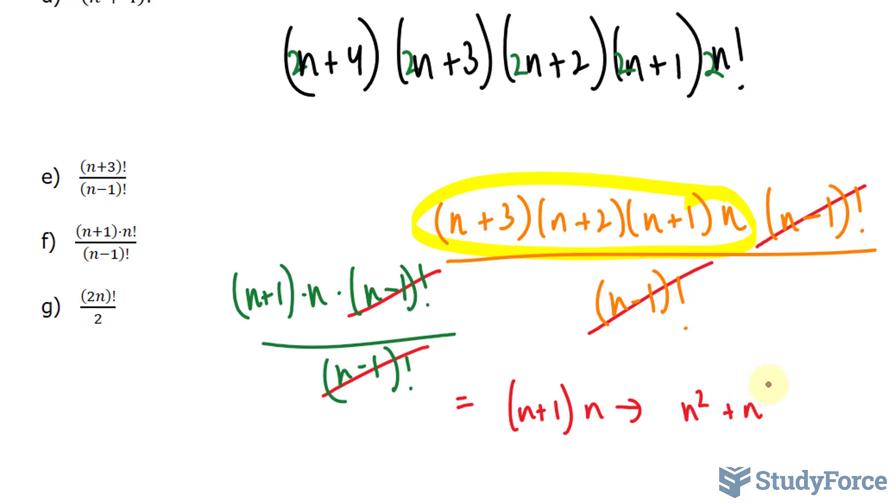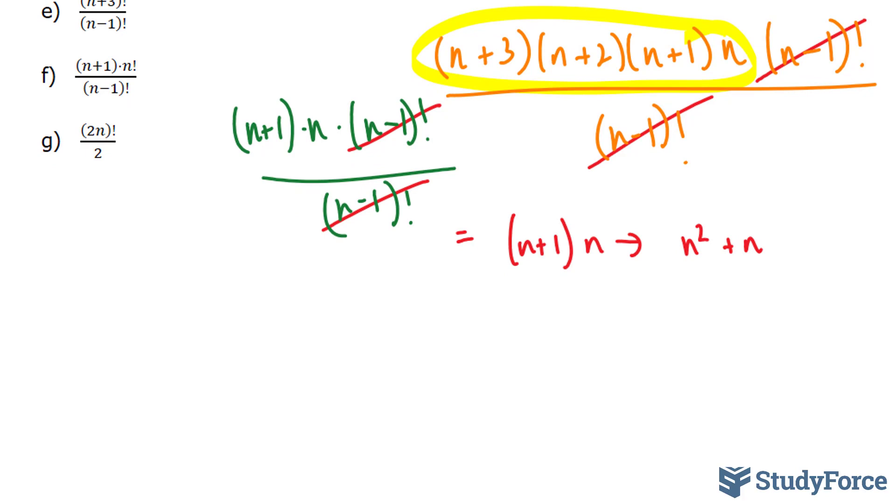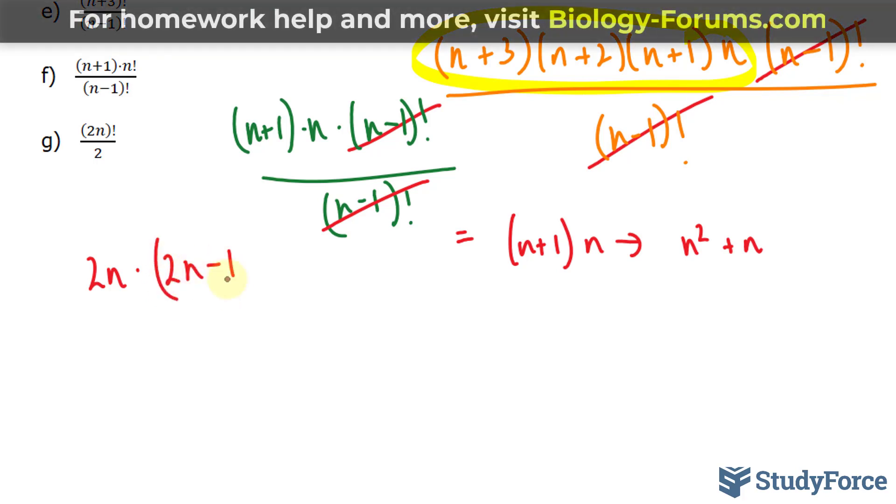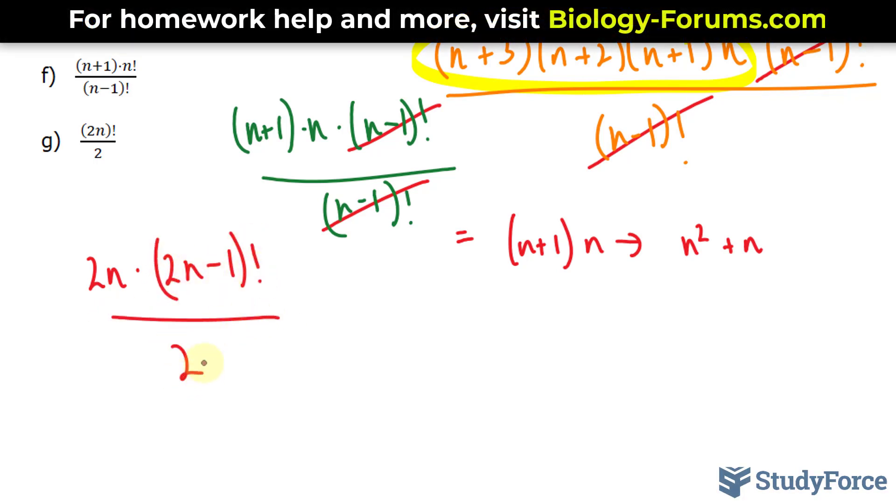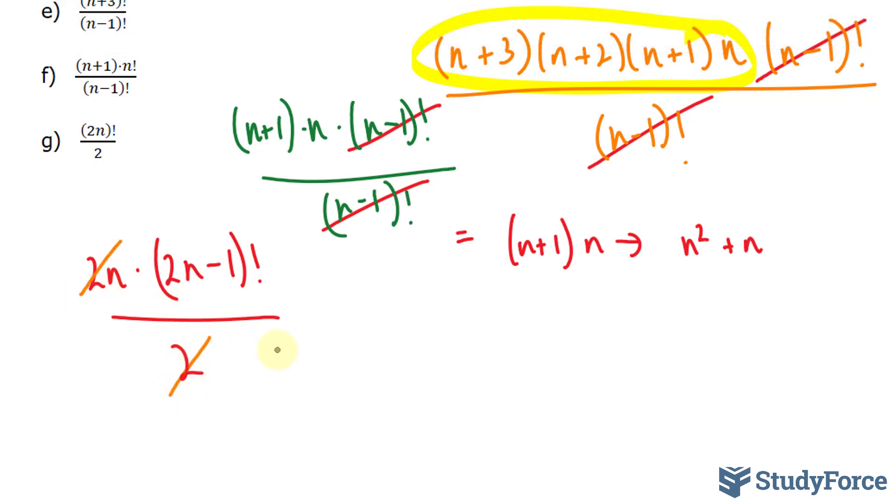Finally, in question g, we have (2n) in brackets factorial over 2. That's the same thing as saying 2n times (2n-1) factorial. Notice that this 2 and this 2 cancel out. And your final answer is n times (2n-1) factorial. And there you have it.